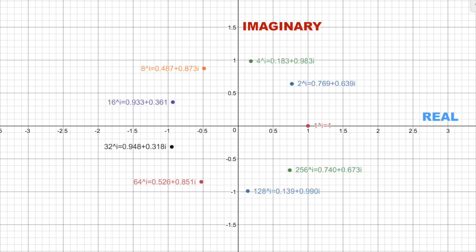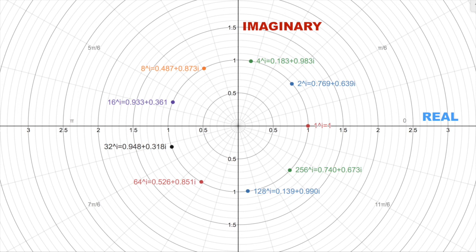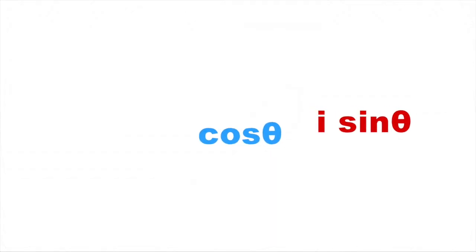Now try plotting real numbers raised to i. The only commonality is that they're all one unit away from the origin. They have a magnitude of 1. It's just that they're rotated at different angles from the real axis. Thus, we can express these numbers as cosine theta plus i sine theta.